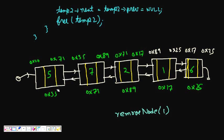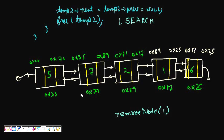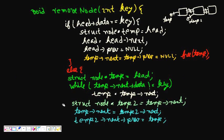The linked list is a linear data structure, so we have to traverse the doubly linked list and at each node compare the data. For deleting any node, first we have to search where it is located — that's important. We have to search where that node is located in the doubly linked list, then only we can delete it.